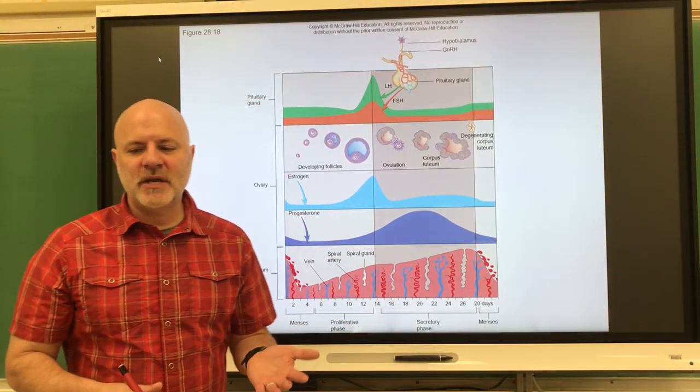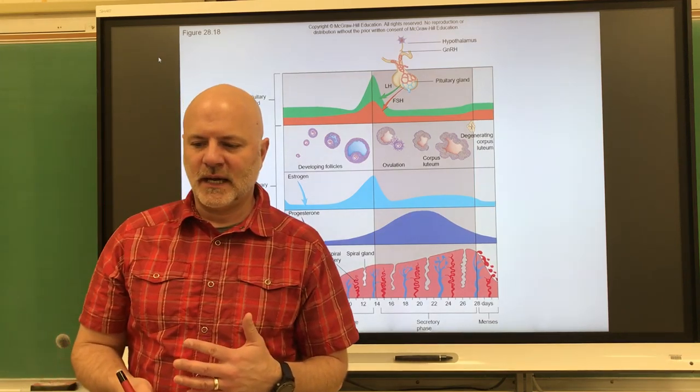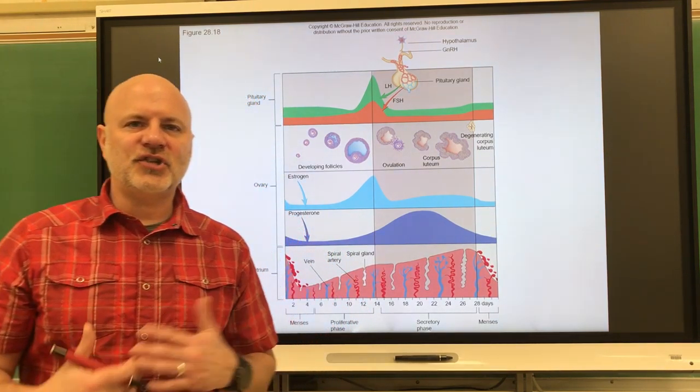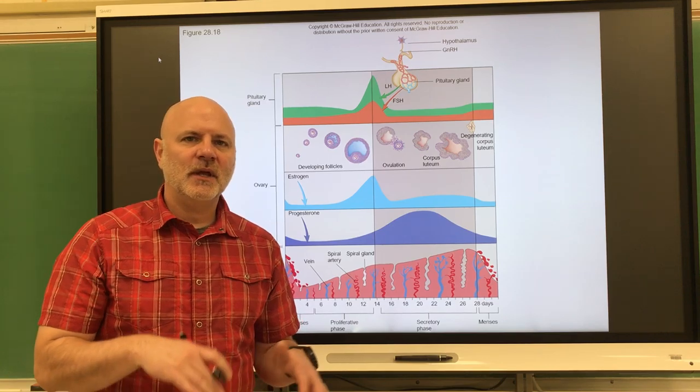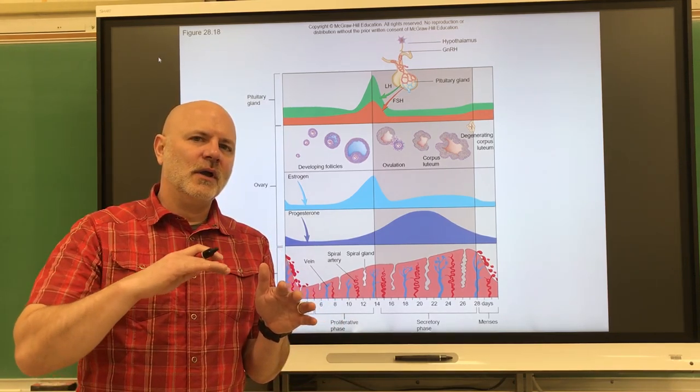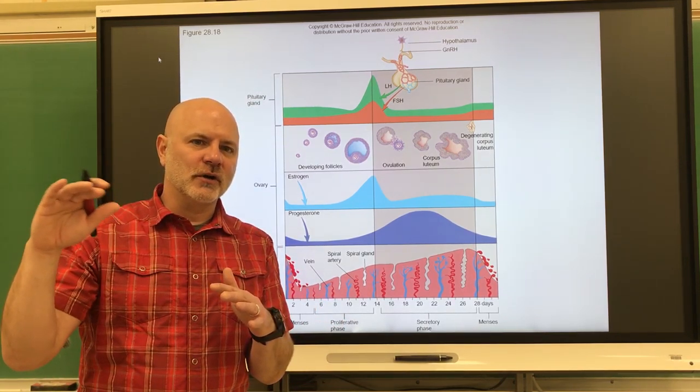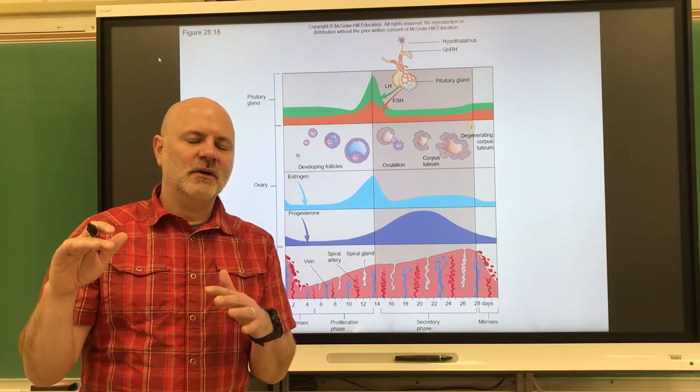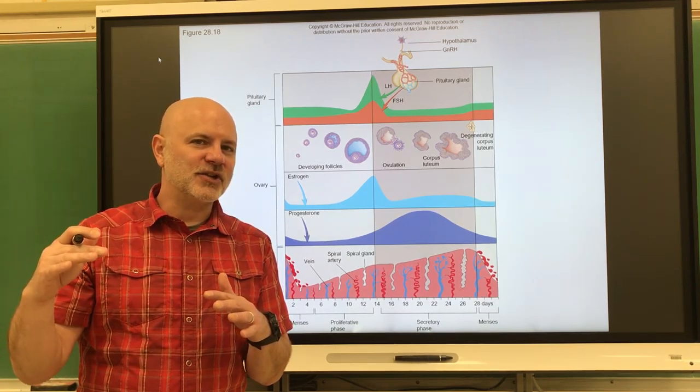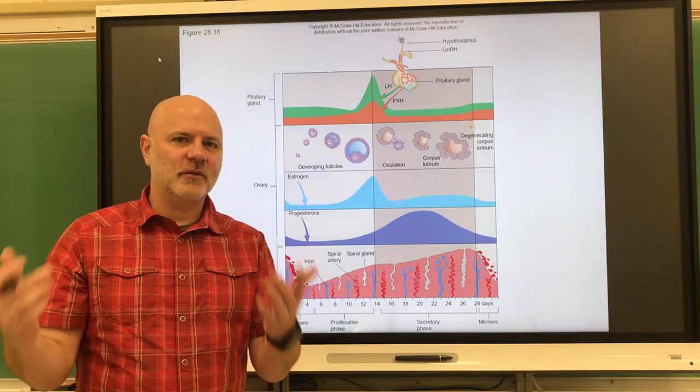Let's take a look at the menstrual cycle, also known as the uterine cycle. These are looking at changes that occur in the endometrium. As I mentioned earlier, the endometrium is getting larger for implantation to occur, and if no implantation occurs, we shed the endometrium and start over again.